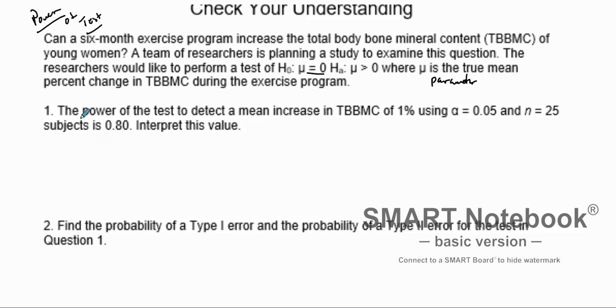And so the power of the test to detect the mean increase in TBBMC of 1%, using a significant level of 0.05 and a sample size of 25 subjects is here. So this right here is our power. Let's interpret this value.